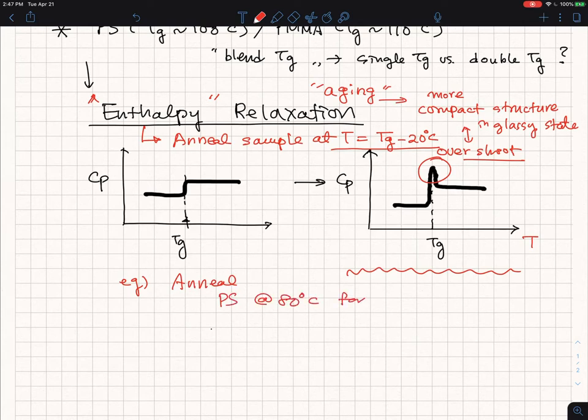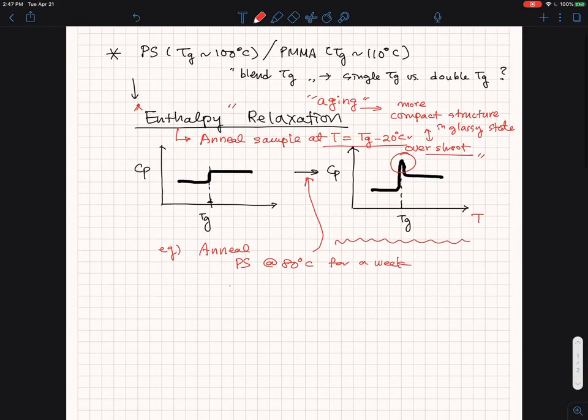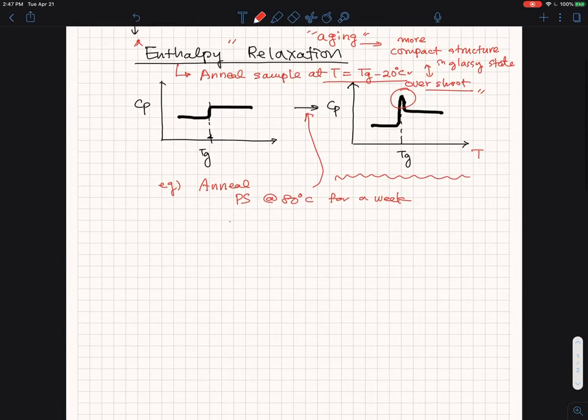If you anneal PS at 80 degrees C for, let's say, for about a week, you will have a lot of big amplification of this overshoot in DSC structures. And so that's what we call the enthalpy relaxation, and I can explain the fundamental reasons why this is the case.